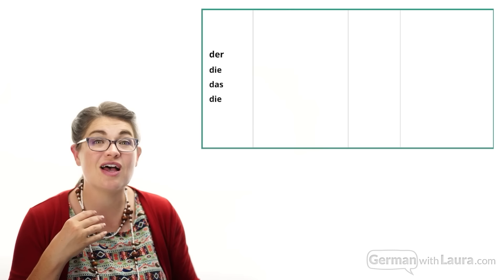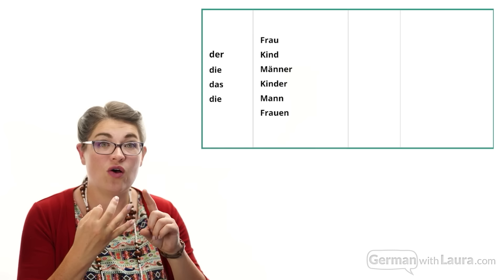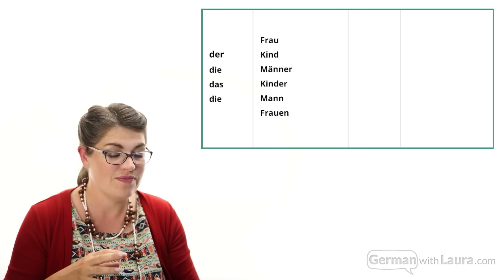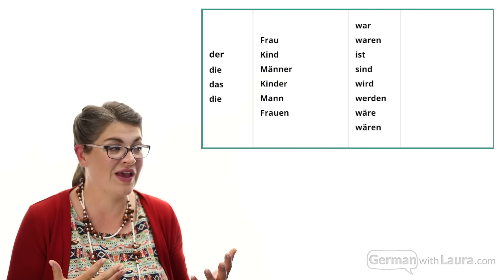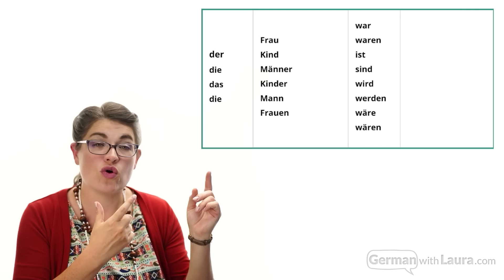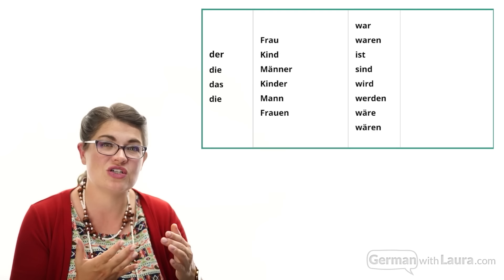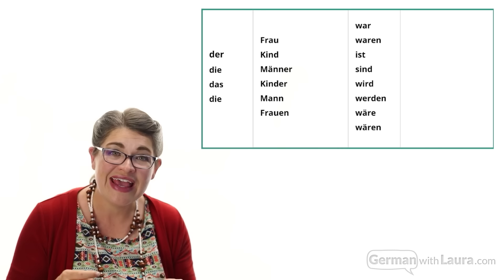This is the third iteration — we're going to focus now on the verb column and change things up there. We still have der, die, das, and die again, working with the same nouns: Mann, Frau, Kind, and their plurals Frauen, Männer, and Kinder. Now look at the verb column — it has grown. We have 'war' and 'waren' as the simple past tense. In German there are two ways to say 'were': the singular and the plural. Then 'ist' and 'sind' in the present tense, 'wird' and 'werden' for the future tense, and 'wäre' and 'wären' meaning 'would be.' Then all the same adjectives.